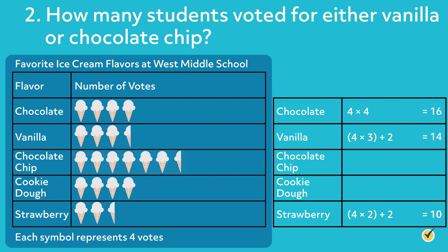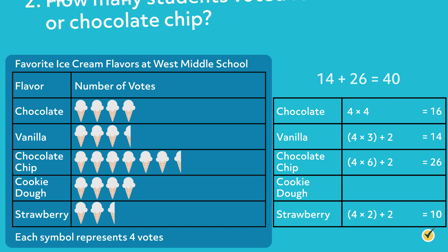Next, find the total number of votes for chocolate chip, which has 6 whole symbols and 1 half symbol. To find the total number of votes, multiply each whole symbol by 4 and then add 2 to the product. 6 times 4 equals 24, and 24 plus 2 equals 26. Therefore, the total number of votes for chocolate chip is 26. The last step is to add the total number of votes for each flavor. 14 plus 26 equals 40, so 40 students voted for either vanilla or chocolate chip.